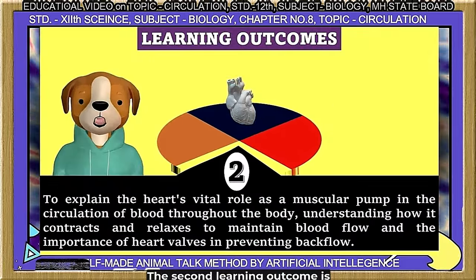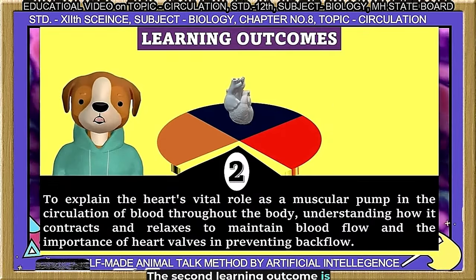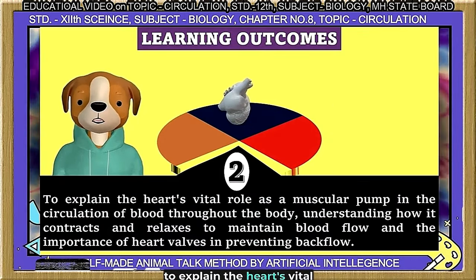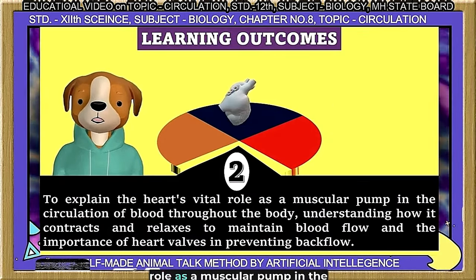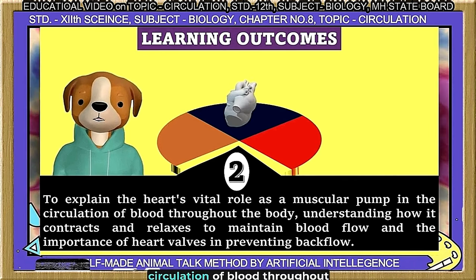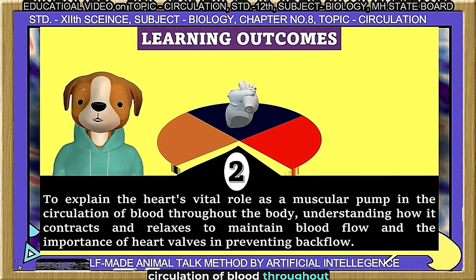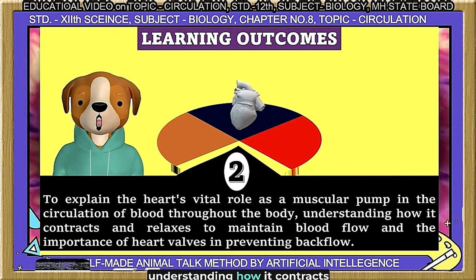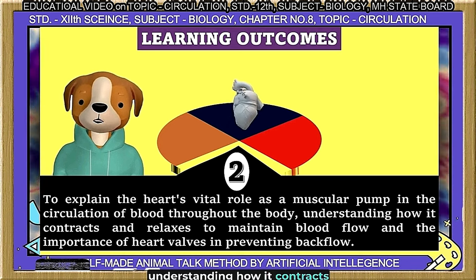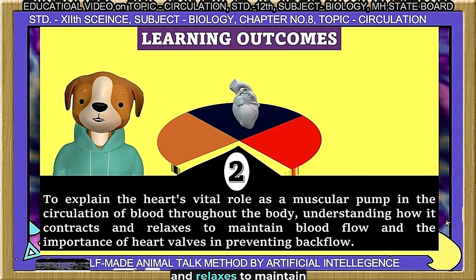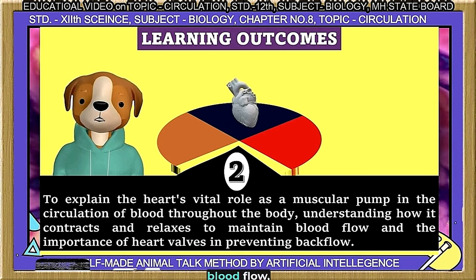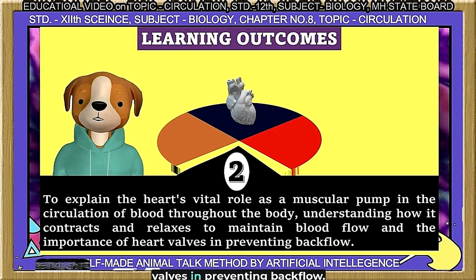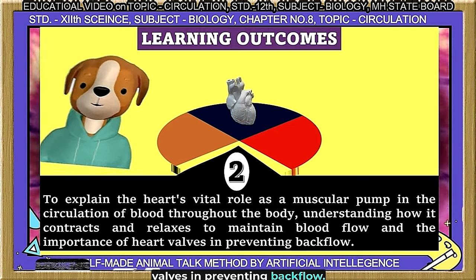The second learning outcome is to explain the heart's vital role as a muscular pump in the circulation of blood throughout the body, understanding how it contracts and relaxes to maintain blood flow, and the importance of heart valves in preventing backflow.